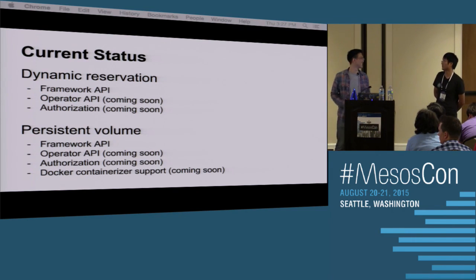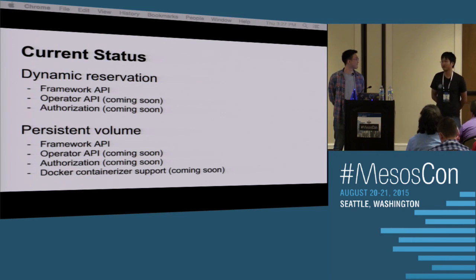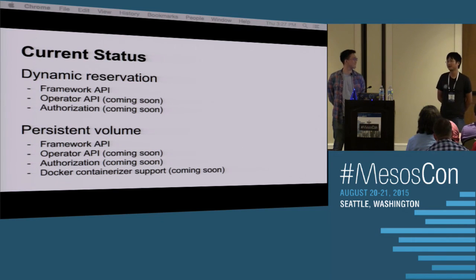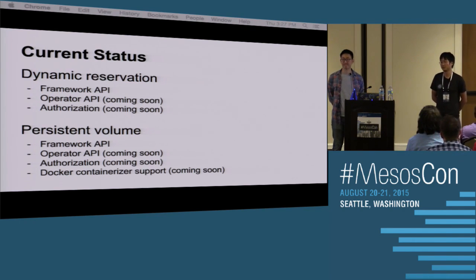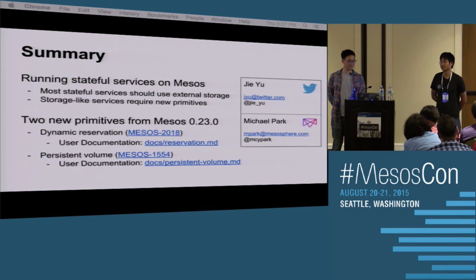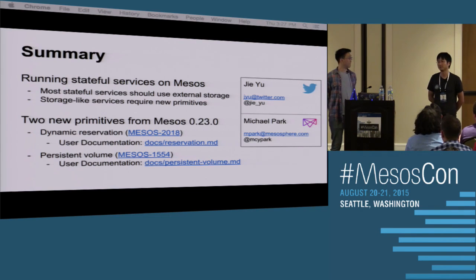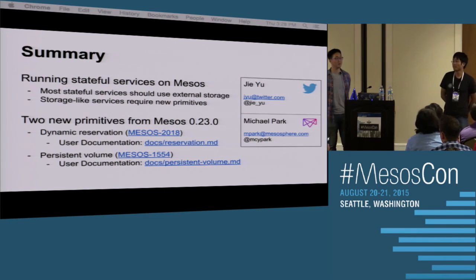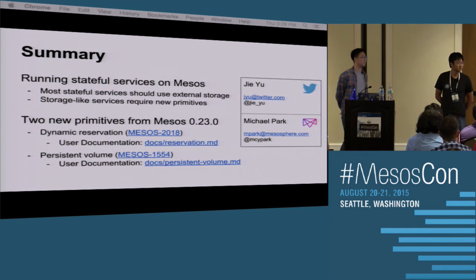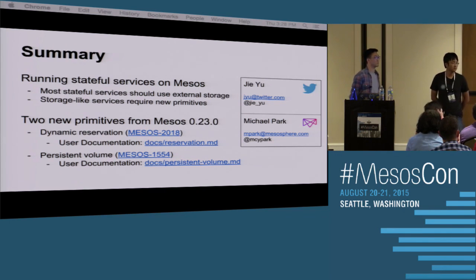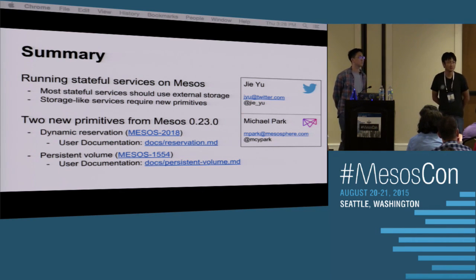Additionally, there is work on another unified containerizer which allows you to run Docker images with Mesos containerizer isolations, effectively allowing you to kill the Docker daemon. There have also been talks with the ClusterHQ Flocker team, which can support Docker volume migration, and integration could be done at some point in the future.